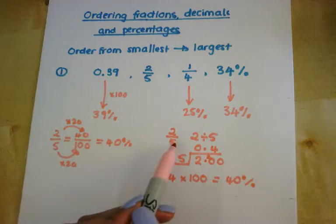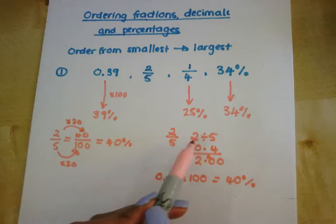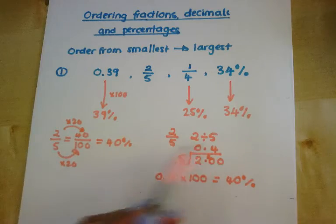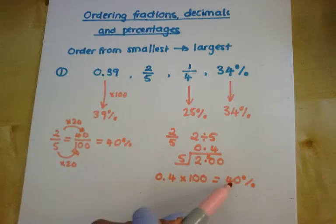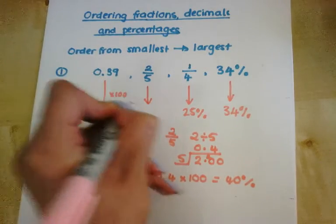This is useful for when the denominator doesn't go into 100, or 1,000, or 10,000. So this one is 40%.